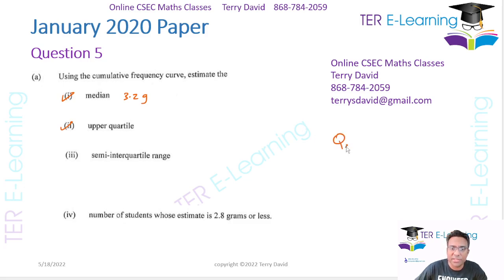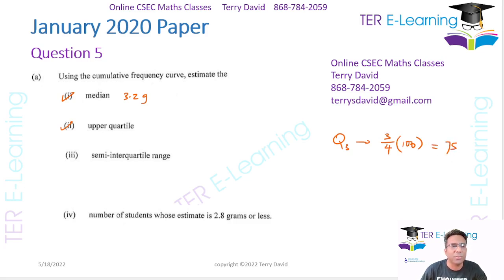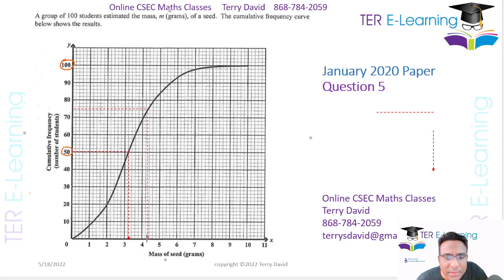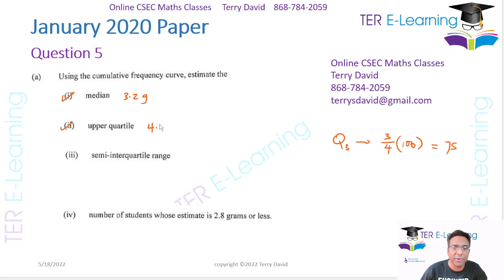Your upper quartile, which is Q3 — we need to look at three-quarters of our data. In this case we have 100, so three-quarters of 100 is 75. We go to the graph and read off where 75 is. According to my diagram, that looks midway between 4.2 and 4.4, so I'll say about 4.3. My upper quartile is 4.3 grams.